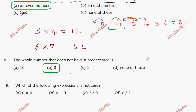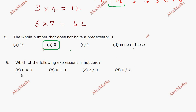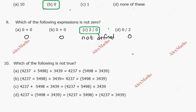Question number 9: which of the following expressions is not 0? Options: 0 into 0 equals 0; 0 plus 0 equals 0; 2 divided by 0 is not defined — so this is not 0; and 0 divided by 2 equals 0. Therefore 2 divided by 0 is not 0 — that is the answer, Option C.